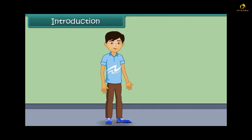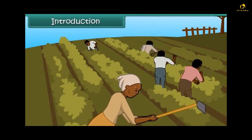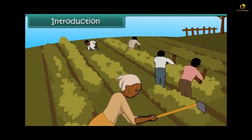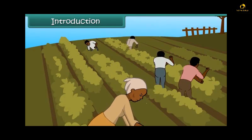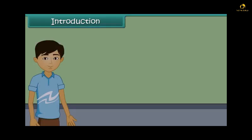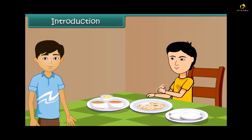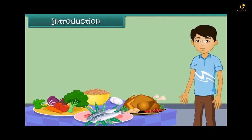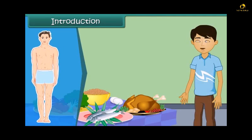Dear friends, you must have seen farmers working in paddy fields. They work all day long. But have you ever wondered where they get the energy to do their work with full enthusiasm? Actually, like us, they also get this energy from the food that they eat. In other words, food is the main source of energy for our body to perform daily activities.